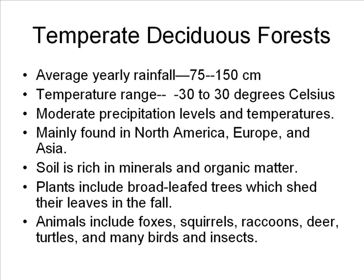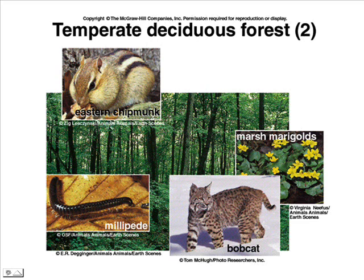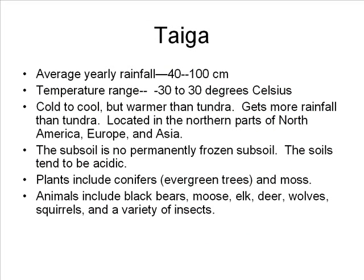Temperate deciduous forests have an average yearly rainfall of 75 to 150 centimeters and a temperature range from negative 30 to positive 30 degrees Celsius. They have moderate precipitation and temperatures and are mainly found in North America, Europe, and Asia. The soil is rich in minerals and organic matter. Major plants include broadleaf trees that shed their leaves in the fall — this is what the term deciduous means.